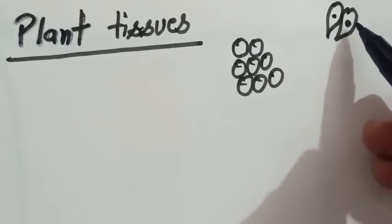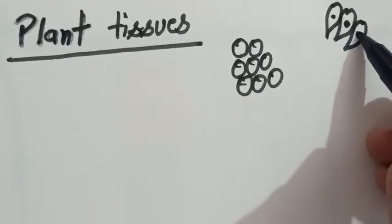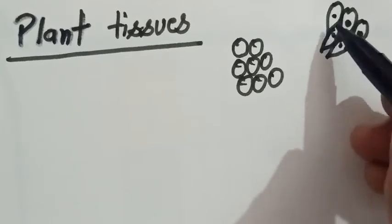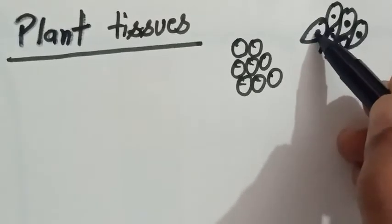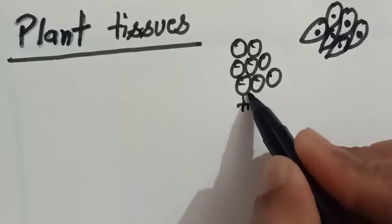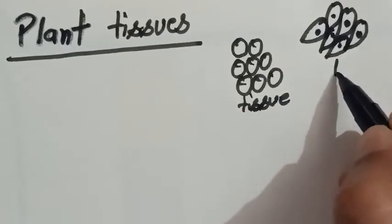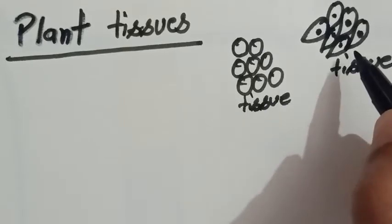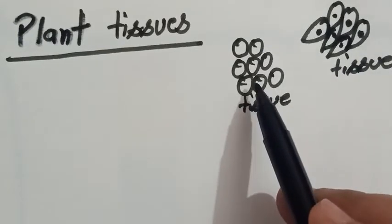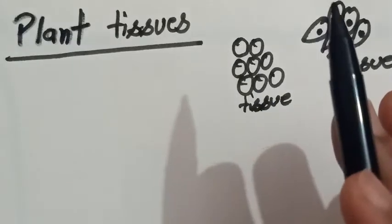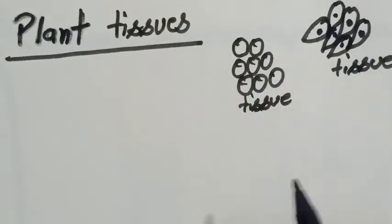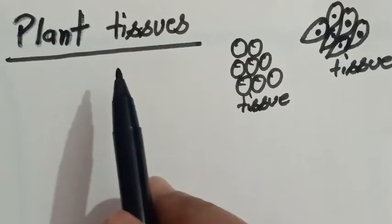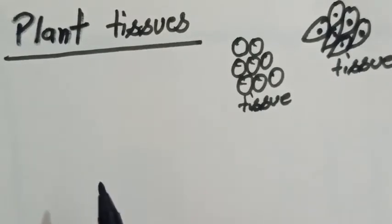So, tissues are the group of cells having similar structure and performing the same function — they are the collection of cells having the same structure and performing their particular function. Now, plant tissues: plants are made up of different kinds of tissues.